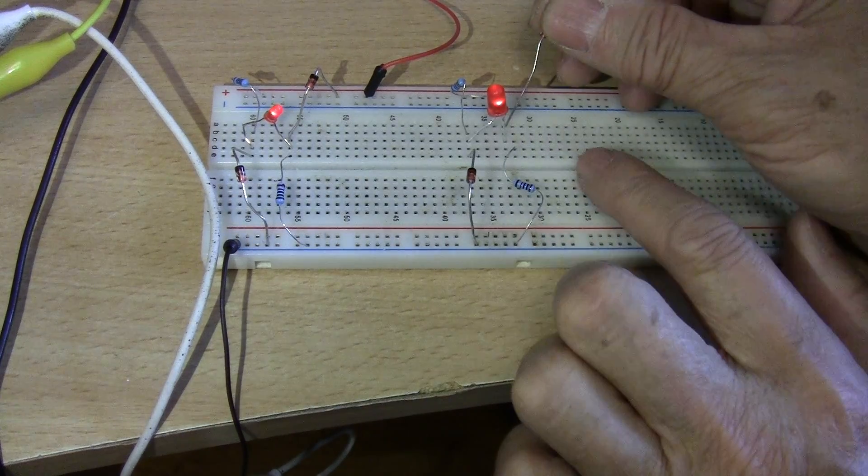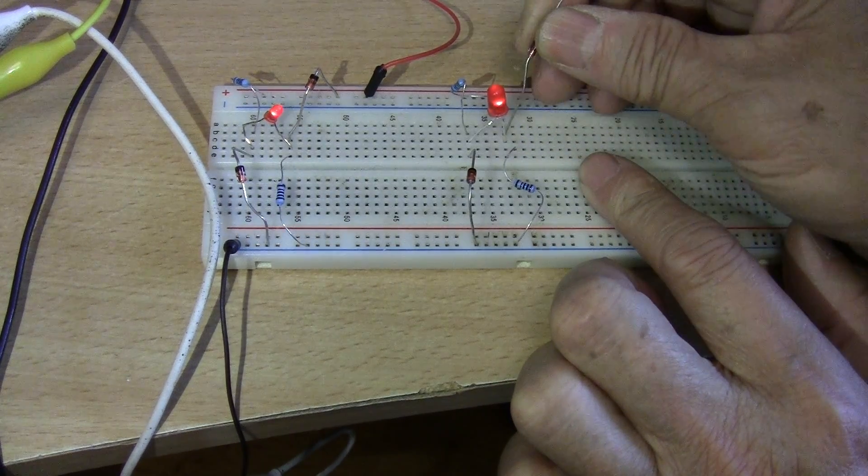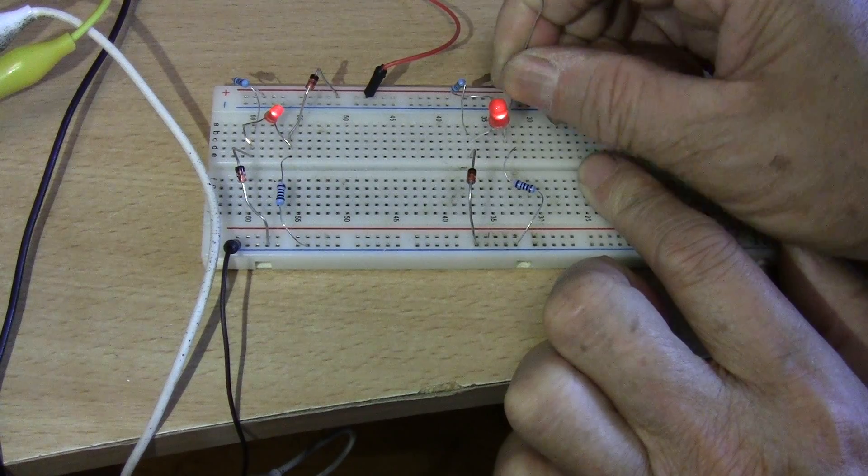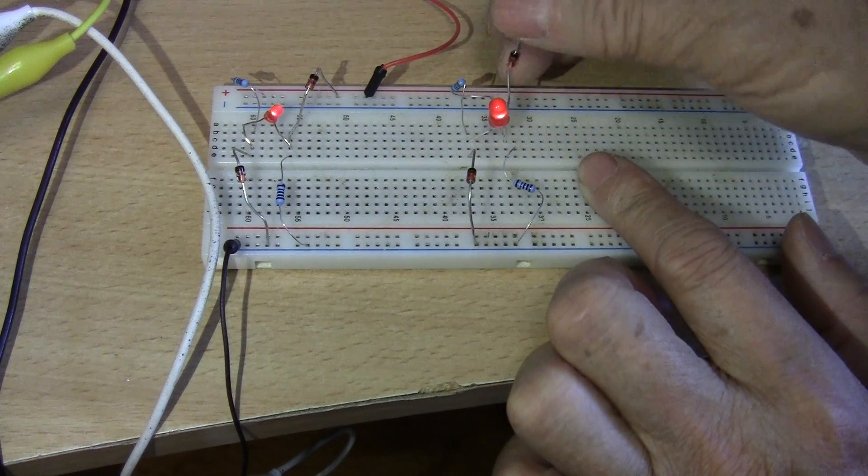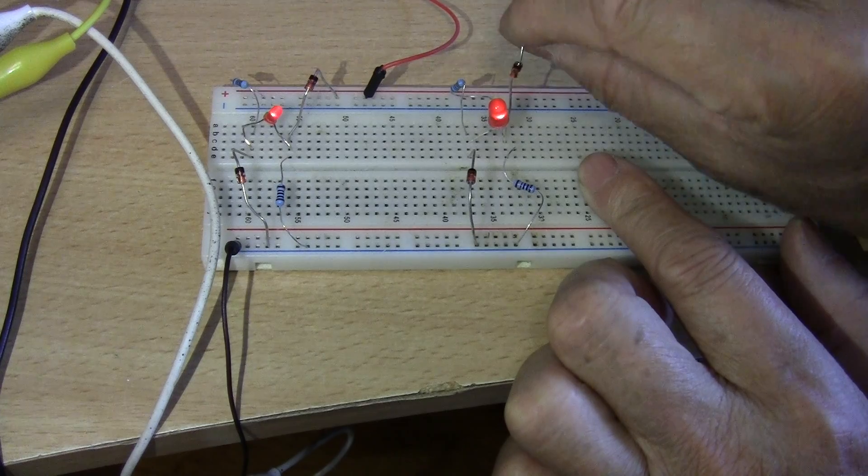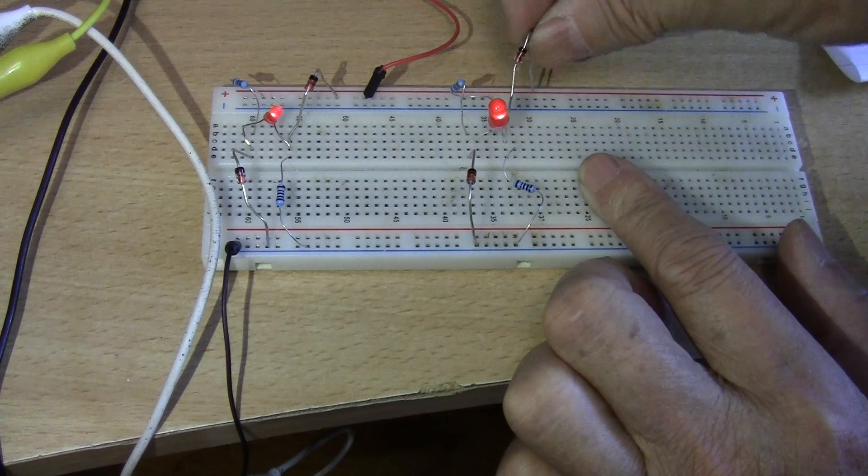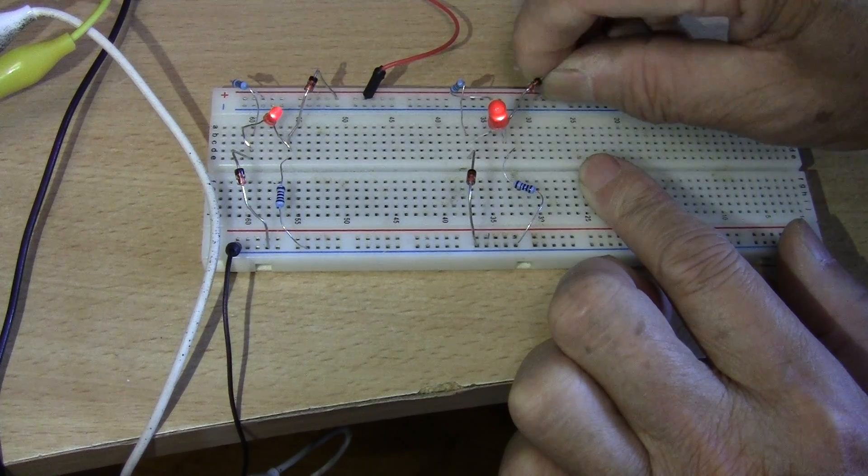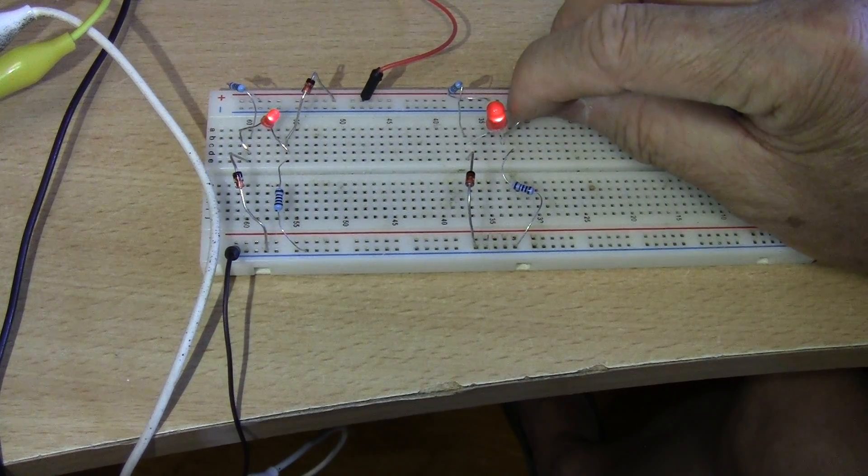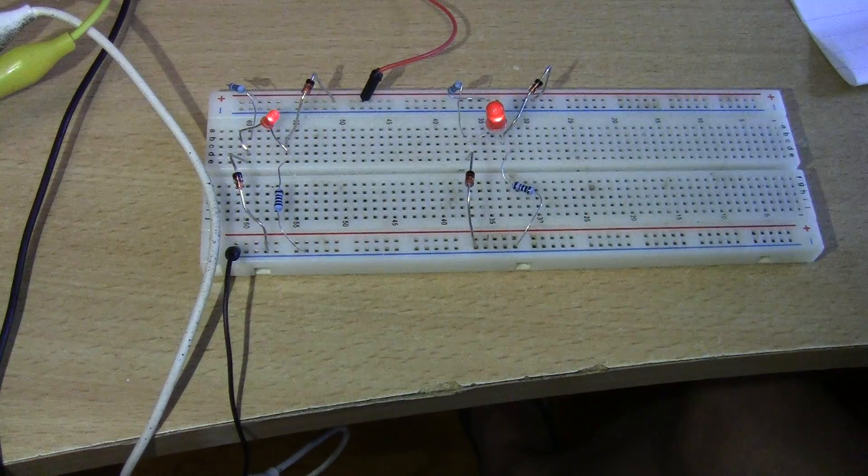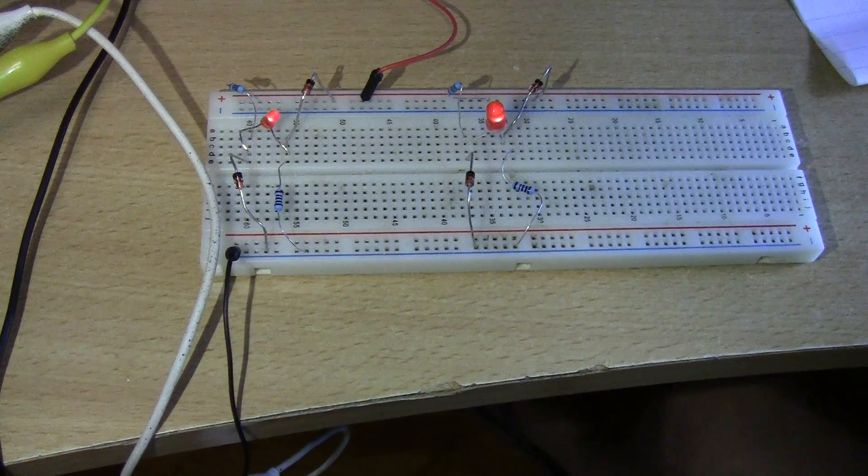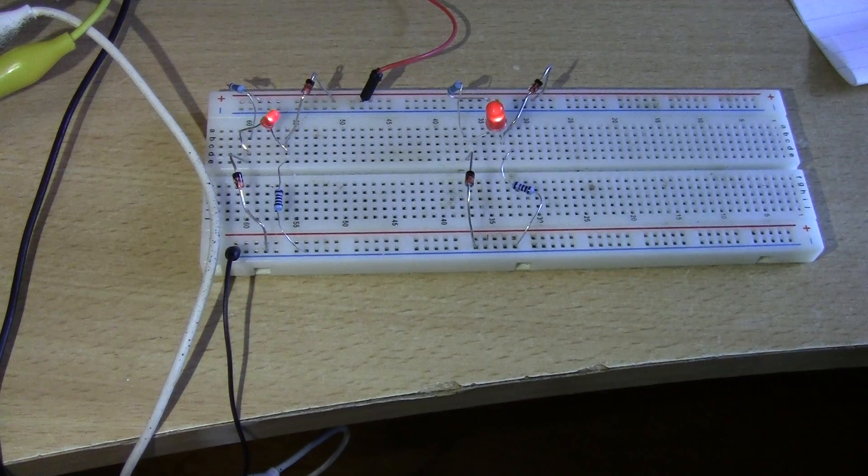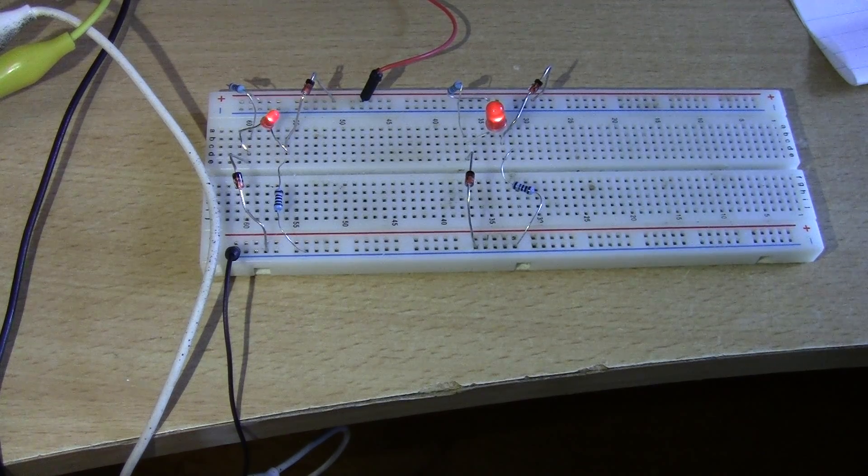Your negative LED leads, again with the black band facing to where the positive rail is. Plug that in there and that's done. Let's adjust the voltage. Let's see if it works.